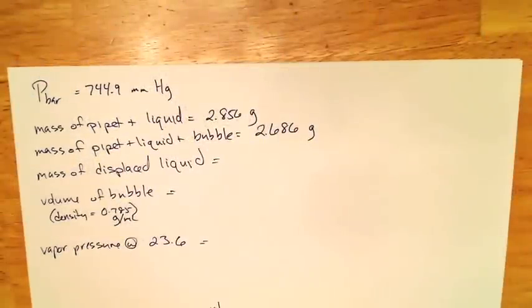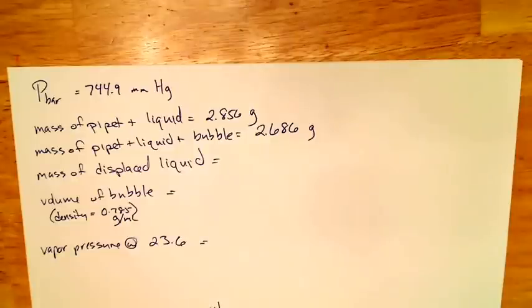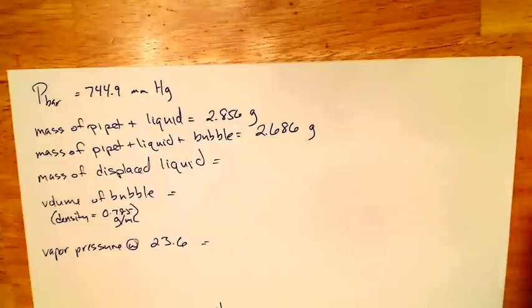Alright, so this little video is designed to help you get through the post lab calculations. So what we'll do first is we'll do the first calculation to figure out our vapor pressure initially and then we'll show how it modifies at different temperatures. We won't go through the whole thing, but we'll at least get a part of it and we'll get to the graph and show you how to do that.